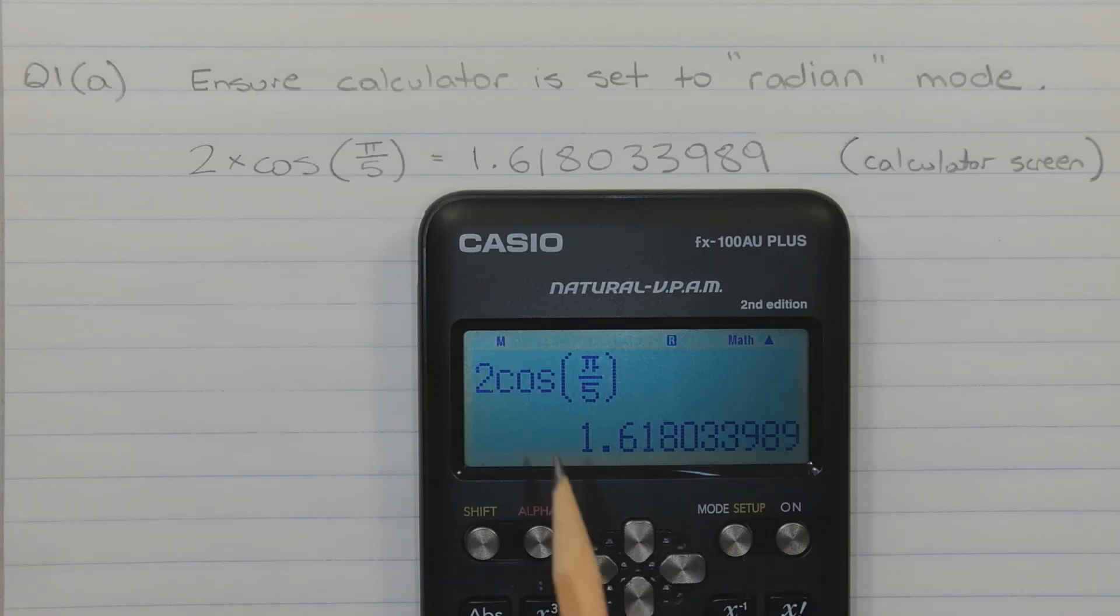The next thing I'm going to do is to type in the expression, press equals, and here's the decimal answer that the calculator will display, and I've written that there.